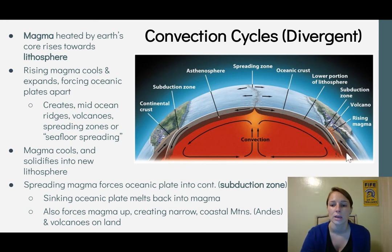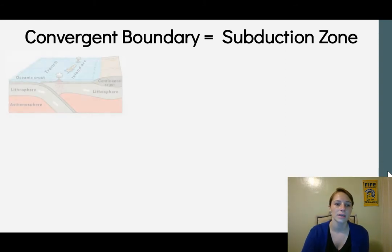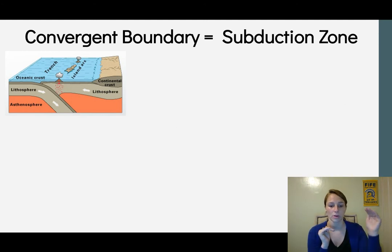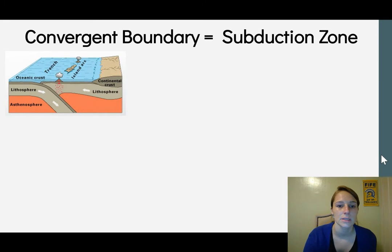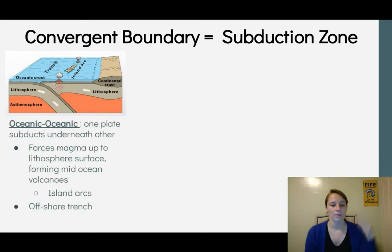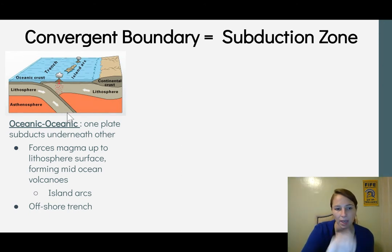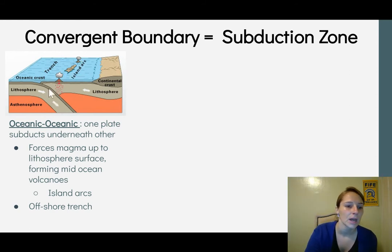Convergent boundaries can involve all types of plates — oceanic or continental. When an oceanic plate meets another oceanic plate, one subducts under the other. This forces magma up at the boundary, leading to mid-ocean volcanoes — Japan is an example. It can also create offshore trenches, where the subducting crust forms a dip in the ocean floor.